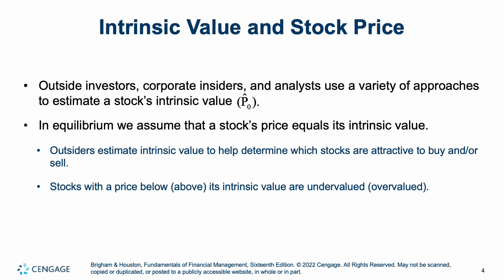Outside investors, corporate insiders, and analysts — anybody interested in buying a company's stock — use a variety of approaches. Anytime someone analyzes a stock, whether they think it will go up or down, they're using various approaches to determine what its price should be. If markets are truly in equilibrium, we assume a company's stock price equals its intrinsic value — trading at exactly what it is worth. Outsiders estimate intrinsic value to determine which stocks are attractive. Stocks with a price below intrinsic value are undervalued; those with a price above are overvalued.